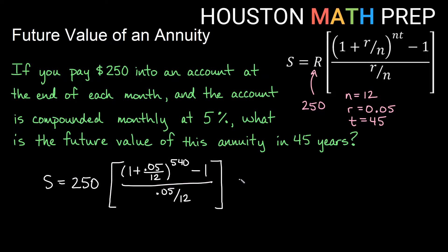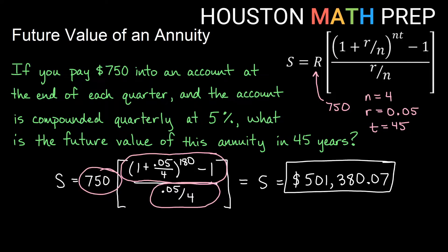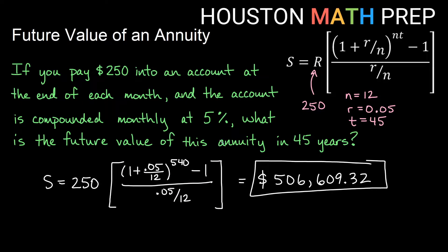If we type it all in correctly, we should get an answer of $506,000. So a little bit different here, right? $609.32. So you'll notice here what we got was $506,609 and some change versus $501,380 and some change. So it actually turns out if we contribute total the same amount, but we break it up into smaller payments and contribute that amount more often, then we're actually going to end up with additional interest due to the compounding. So that's a little additional lesson to be learned here, I guess, with annuities and contributing regular payments.